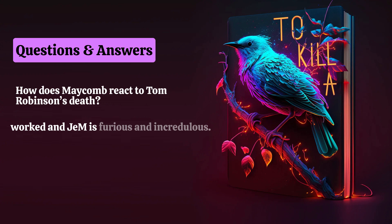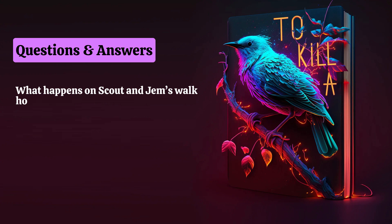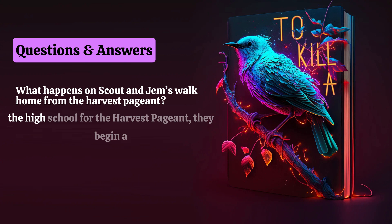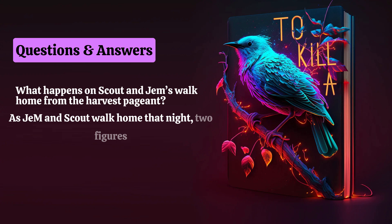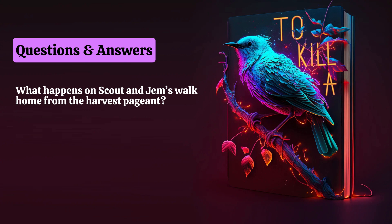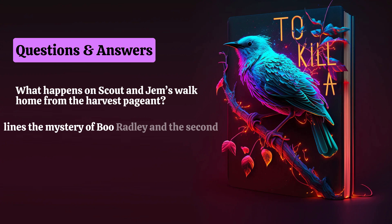What happens on Scout and Jem's walk home from the Harvest Pageant? When Jem and Scout set off through the woods to the high school for the Harvest Pageant, they begin a journey that is long in a figurative sense, for the events that occur that night will change their lives forever. As Jem and Scout walk home that night, two figures emerge from the shadows, each with their own intentions. First, Bob Ewell violently attacks Jem and Scout, but then Boo Radley appears and saves the children. This climactic night unites the novel's two major plot lines: the mystery of Boo Radley and the second tragic outcome of the trial, another senseless death.